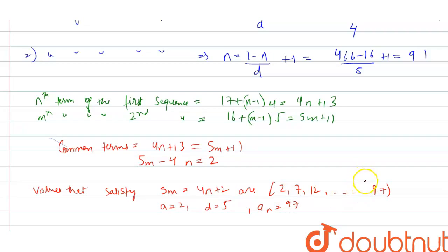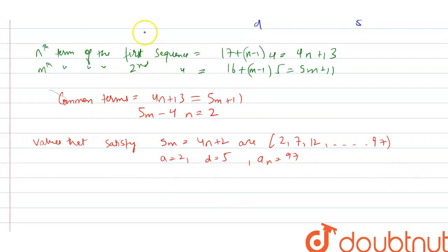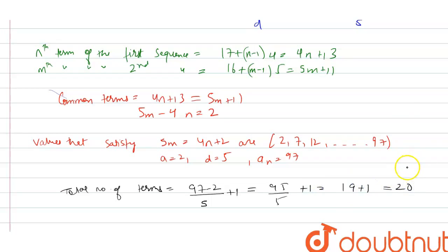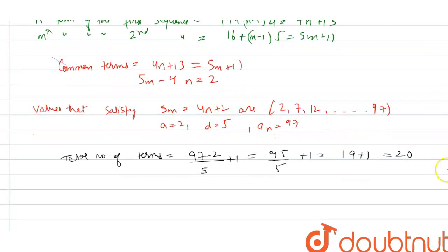So the total number of common terms = (97 - 2) / 5 + 1 = 95 / 5 + 1 = 19 + 1 = 20. So the number of common terms is equal to 20. Thank you.